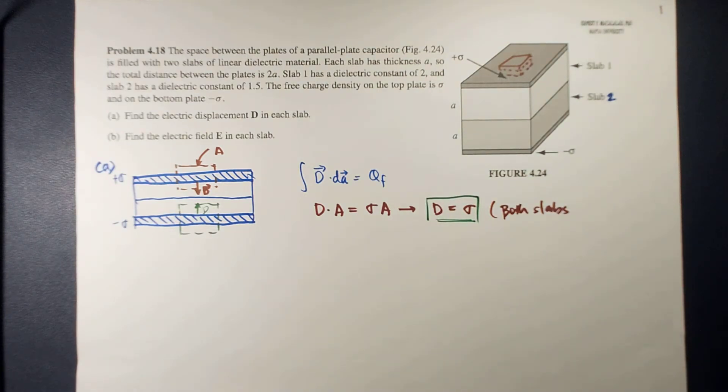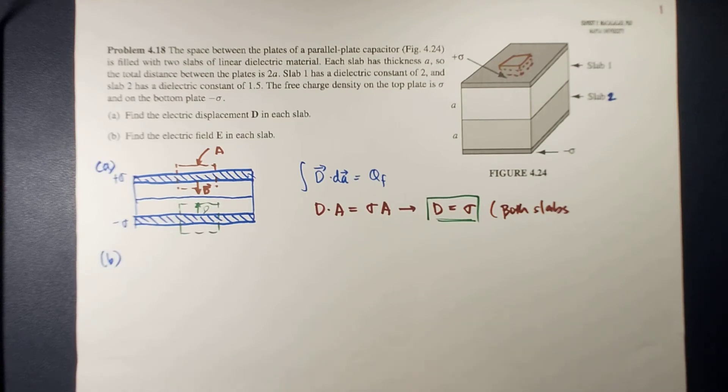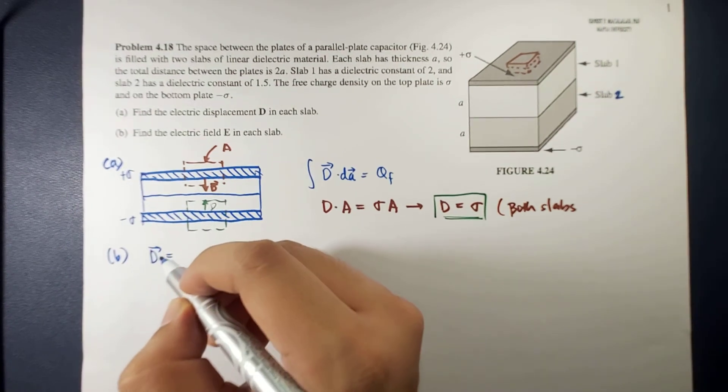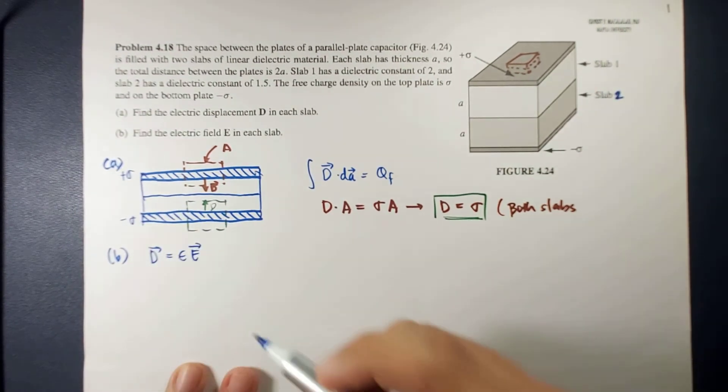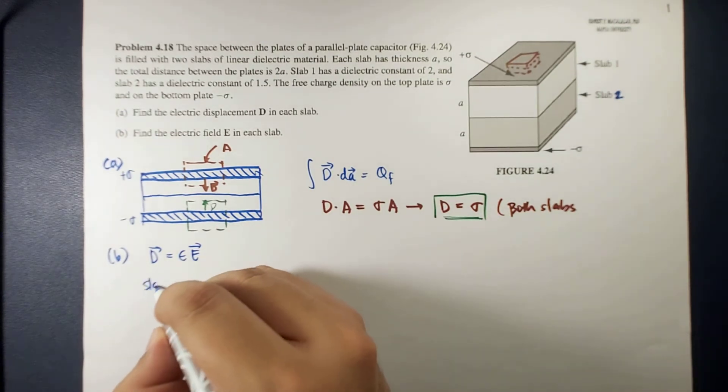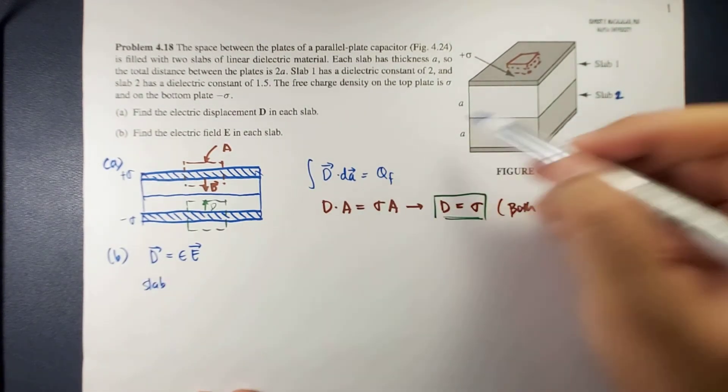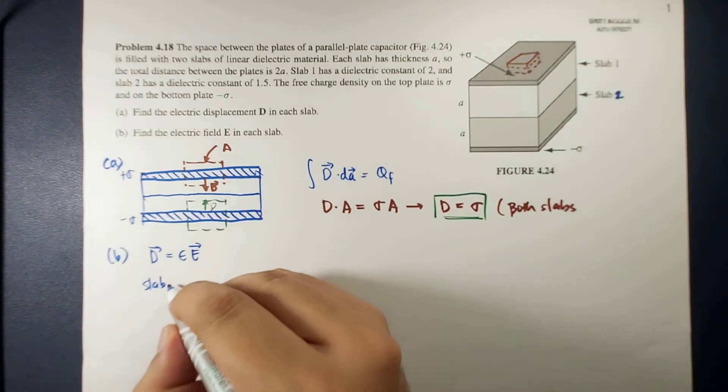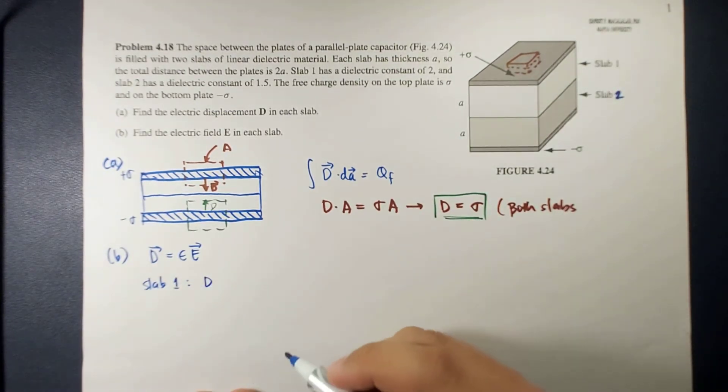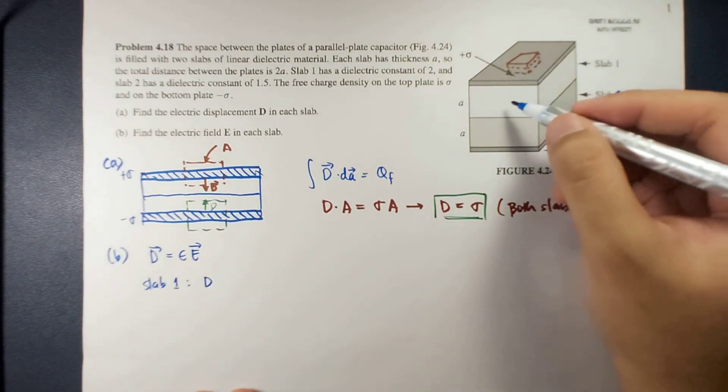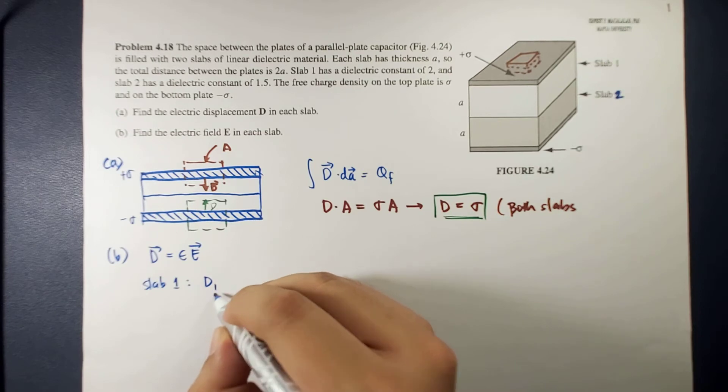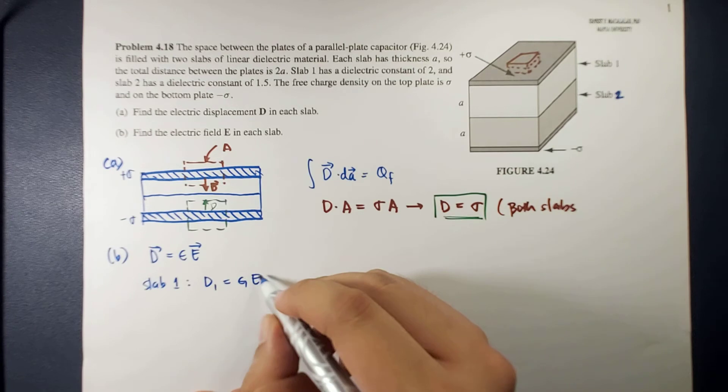Okay, so this is now your electric displacement in each slab. On the other hand, letter B. Remember that the electric displacement is epsilon E. So therefore, because epsilon for each slab is different, so therefore, we will separate the electric field for each slab. So in this case, D1, for slab 1, would be epsilon 1 E1.